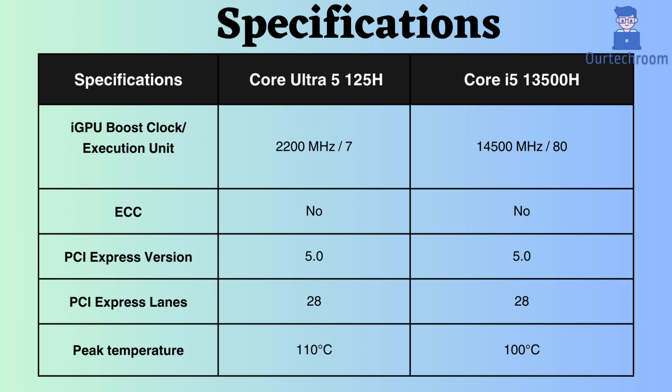Neither of these processors supports ECC, making them unsuitable for critical systems like servers and workstations. Both support PCI version 5 and have 28 PCI lanes. The peak temperature supported by the Core Ultra 5 125H is slightly higher than that of the Core i5-13500H.